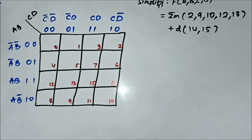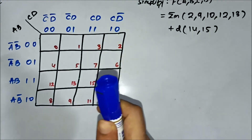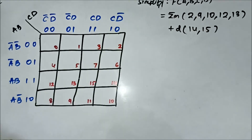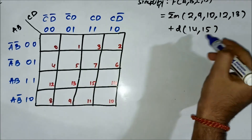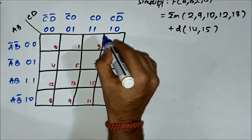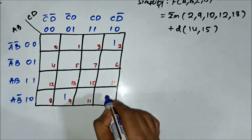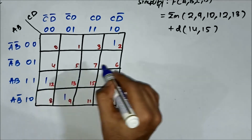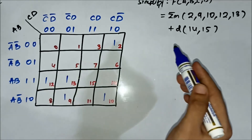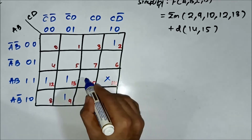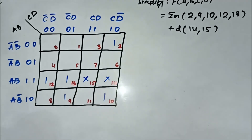Here we have another question on don't care condition SOP KMAP. We have the min-term values and the don't care values. We mark the min-term values as 1 first: 2, 9, 10, 12, 13. Then 14 and 15 are marked as X — they are under the don't care bracket.